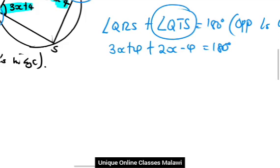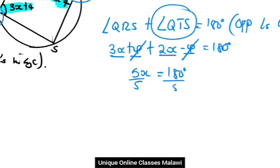Angle QRS, we have 3x plus 4, plus QTS, we have 2x minus 4, is equal to 180 degrees. Combine like terms together, we get 5x is equal to 180 degrees. To find the value of x, we divide by 5. So x is equal to 180 divided by 5, the answer is 36.